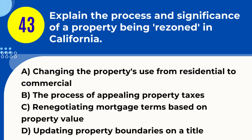Question 43. Explain the process and significance of a property being rezoned in California. A. Changing the property's use from residential to commercial. B. The process of appealing property taxes. C. Renegotiating mortgage terms based on property value. D. Updating property boundaries on a title. Answer: A. Explanation. Rezoning is the process of changing the designated use of a property, such as from residential to commercial or industrial. It is significant because it can drastically alter what can be built or how a property can be used, affecting its value and the community.